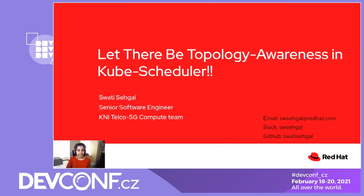Hello, everyone. Thanks for taking the time to attend this talk. My name is Vaati Sehgar, and I'm a senior software engineer working for the Telco 5G compute team in Red Hat. My team and I have been working on enhancing Kubernetes and OpenShift to deliver leading-edge solutions and innovative enhancements across the stack. Our goal is to enable customers and partners to run high-throughput and latency-sensitive cloud-native networking functions on OpenShift. I've been working with engineers and stakeholders from Red Hat, Huawei, Nokia, Samsung, and Intel with a goal to enable topology-aware scheduling in Kubernetes. Today I'm going to be talking about the work we've done on this project so far.